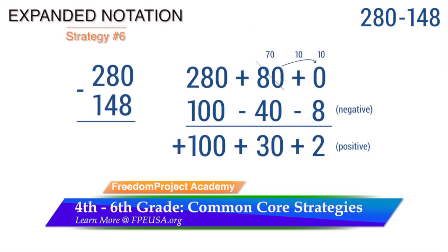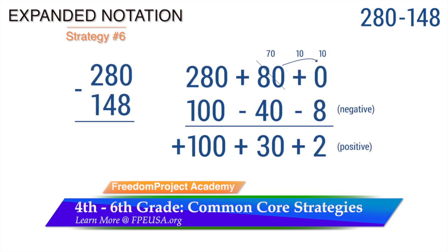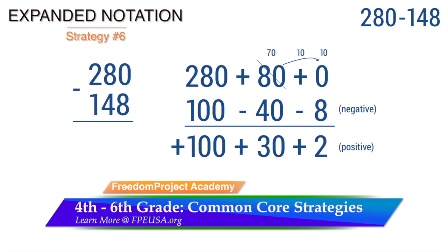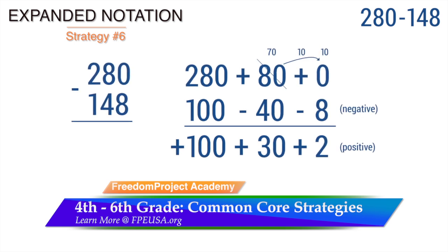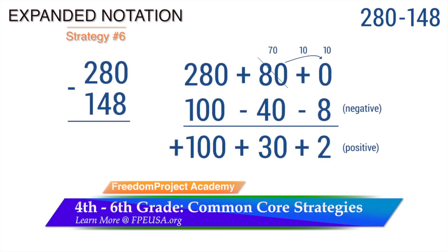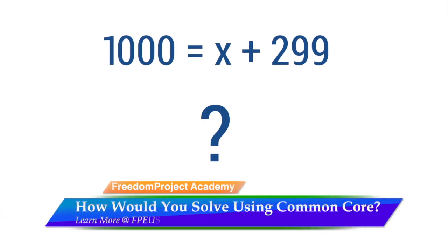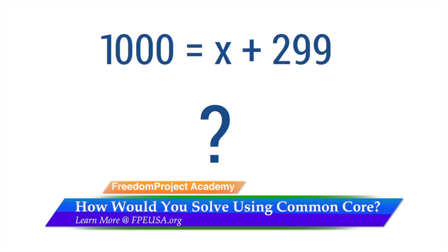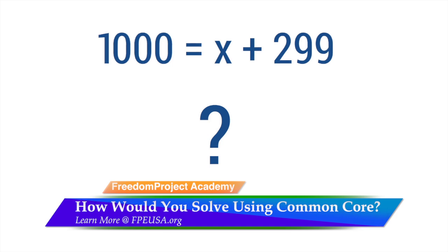This is not even the proper method to give change. Expanded Notation is the most popular strategy. Notice the use of the terms negative and positive numbers before the student is capable of subtracting in the traditional and efficient manner. To illustrate the impact: 1,000 equals x plus 299 is an example of an equation pre-algebra or algebra 1 students would be asked to solve. To solve for x, one must subtract 299 from both sides of the equation. It is likely that students will have to resort to using one of these strategies or a calculator if they were not lucky enough to learn the traditional right-to-left method.